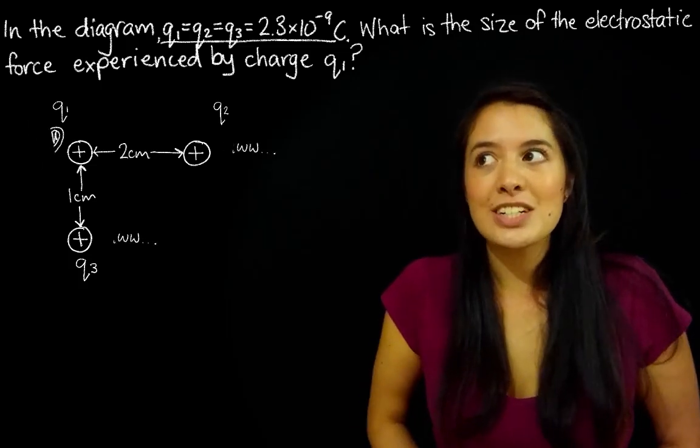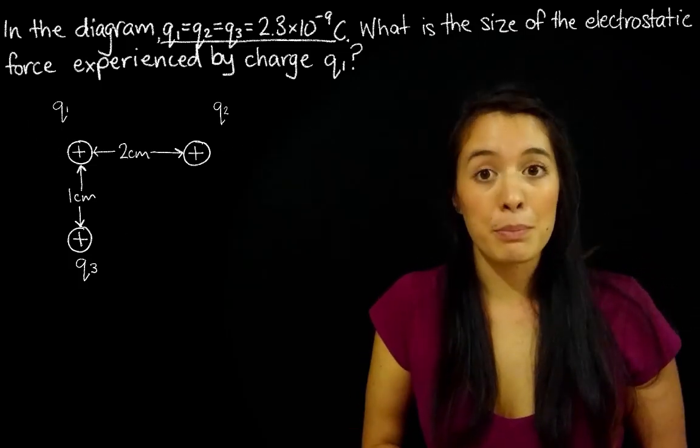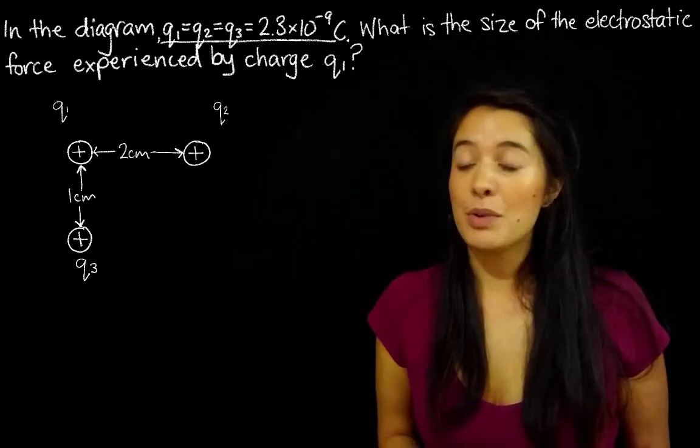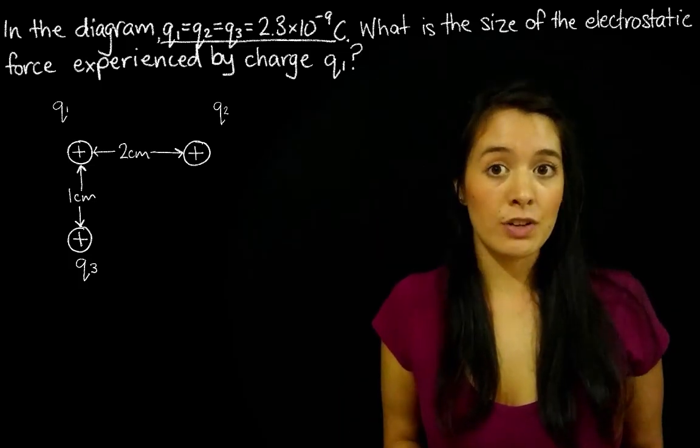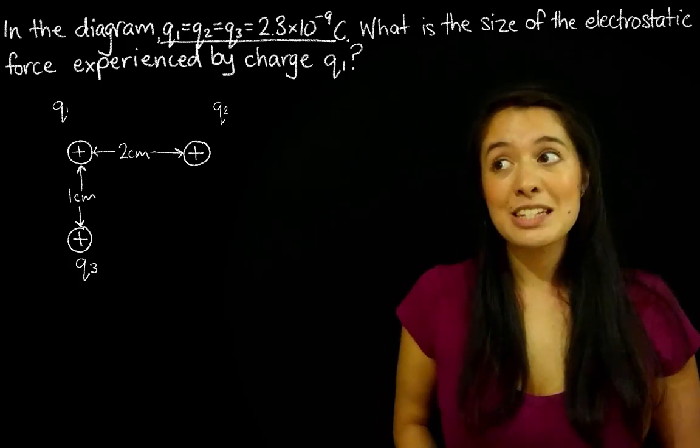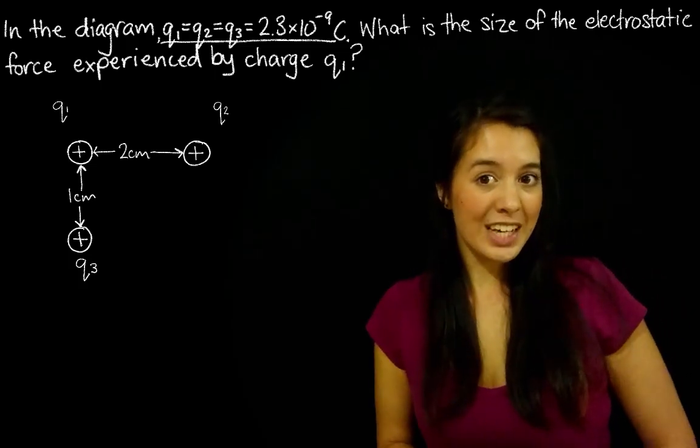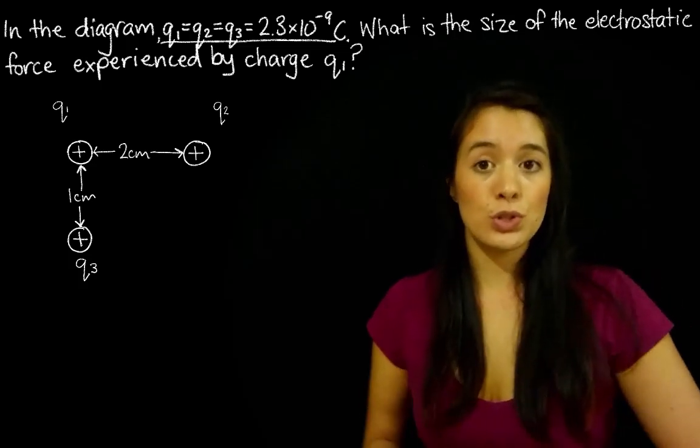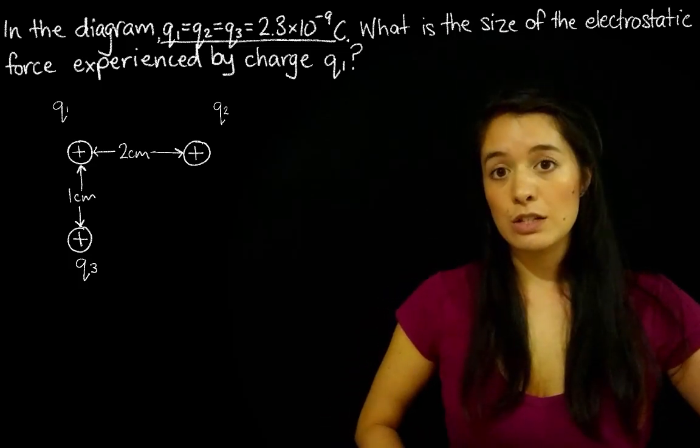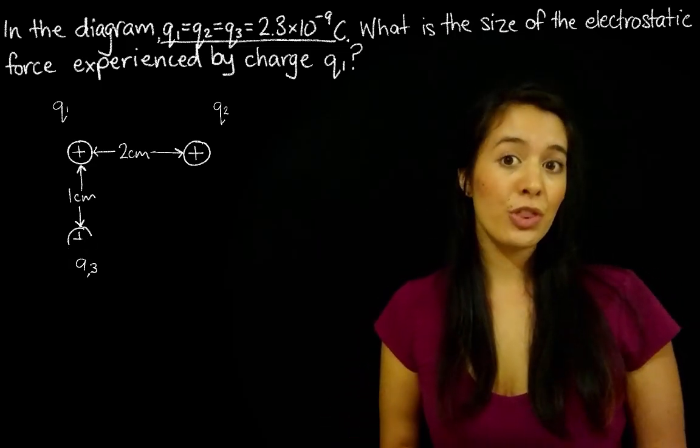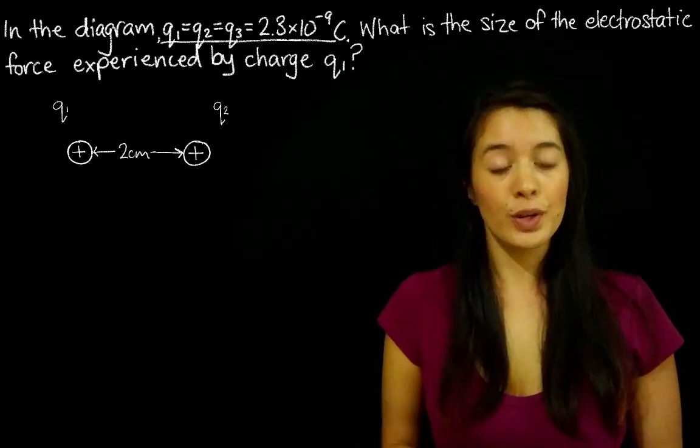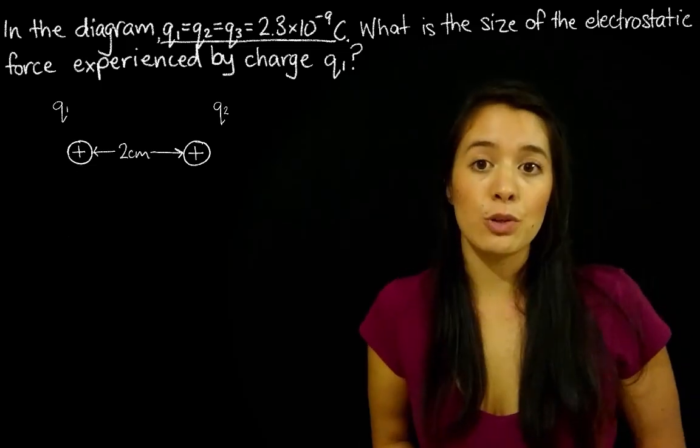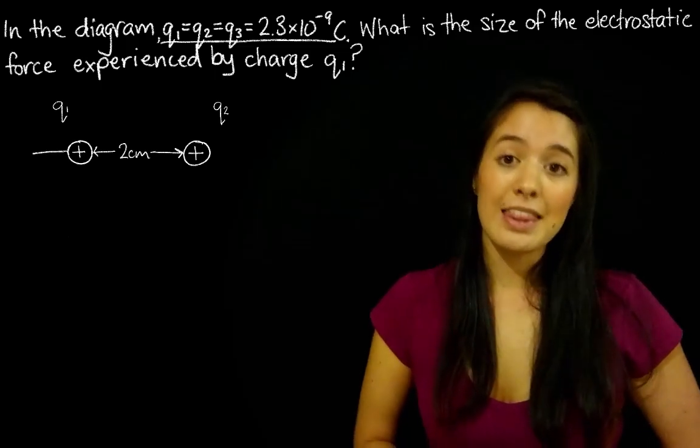So what direction is Q1 actually being pushed in? I mean, it's easy when there's two charges, right? Because they're just going to go in opposite directions to one another. When there's three, it gets a little bit trickier, but luckily we can just split it up into two lots of two charges. So let's just for a moment get rid of Q3. So we're left with Q1 and Q2, and this is easy, right? We know what way Q1 is going to go. It's going to go that way.